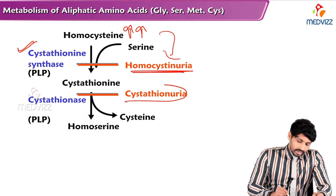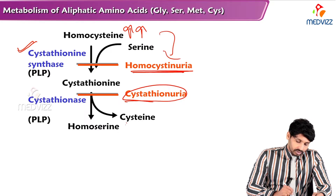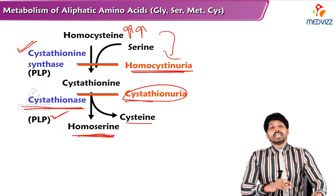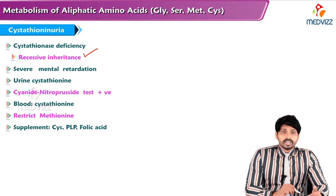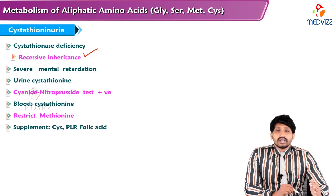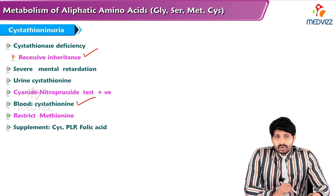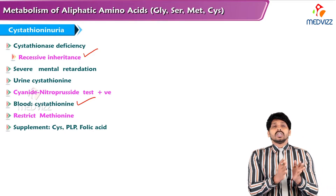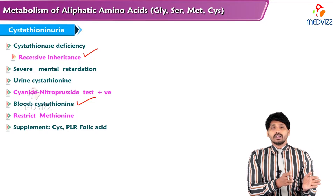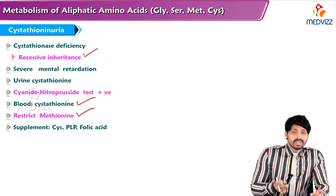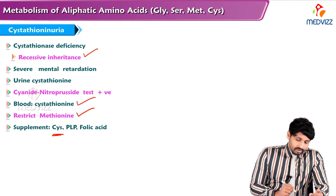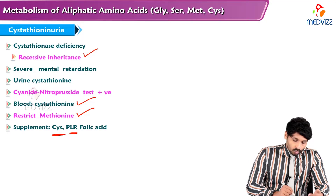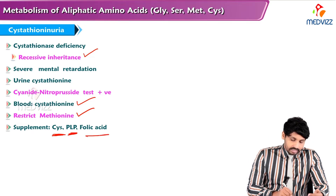In cystathionuria, cystathionine cannot be cleaved to form cysteine because cystathionase is not working, and PLP may also be defective. This is a recessive inheritance condition and also causes severe mental degradation. Urine cystathionine levels are elevated, and the cyanide nitroprusside test will be positive. Blood also shows high levels of cystathionine because cystathionase cannot convert cystathionine to homocysteine and cysteine. Treatment: restrict methionine in the diet and provide a diet rich in cysteine along with pyridoxal phosphate and folic acid as coenzymes.